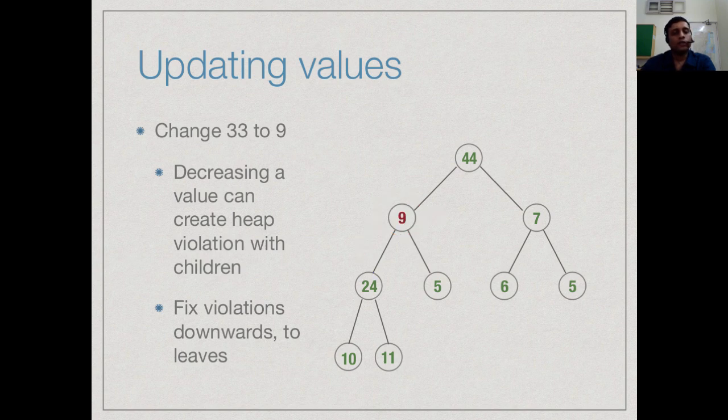If I bring it down to 9 then I have the problem between 33 and 24. If this is my new value I have to check with its two children and take the biggest one up in this case is 24. Now having come here I need to now check its two children and take the biggest one up in which case it is 11 and so this is how it works. When I update values and decrease the value I have to fix violations downwards because reducing a value cannot make it bigger than its parent but it can make it smaller than one of its two children.